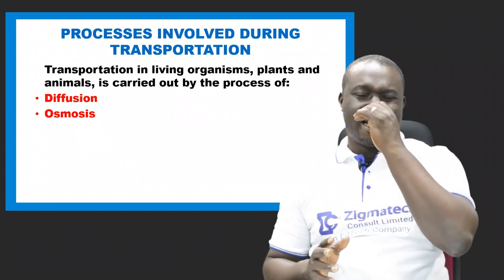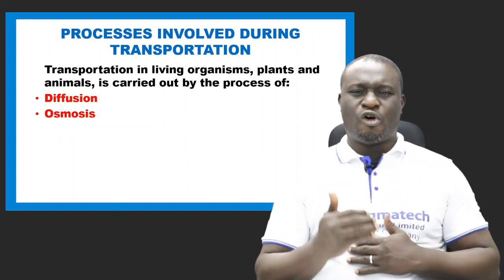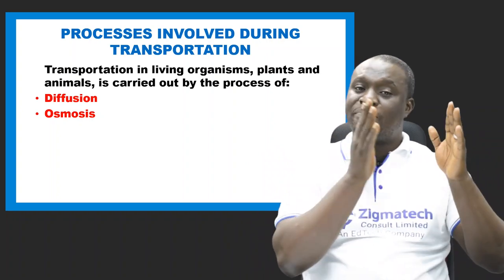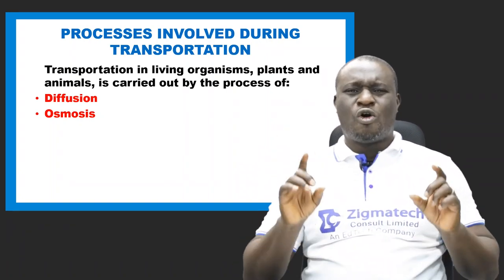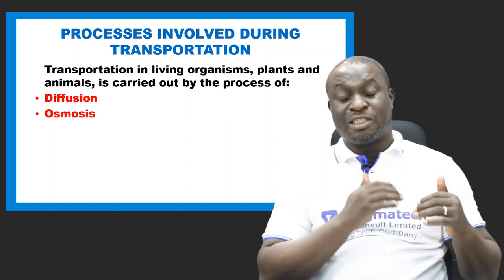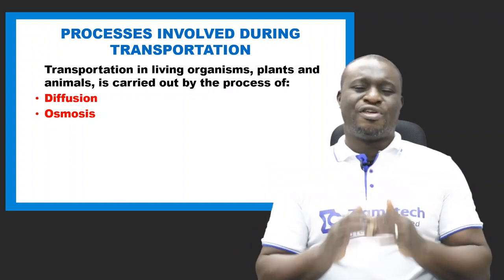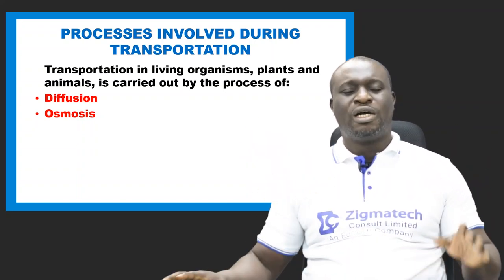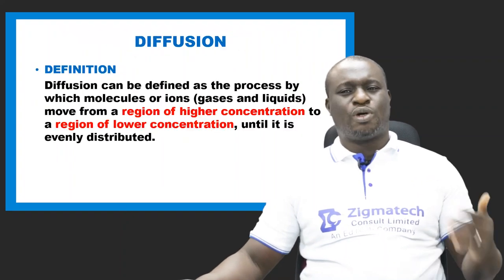The next thing to take note of is the processes involved during transportation. Transport system occurs both in plants and animals. There is always a common and significant process observed when transportation is carried out in both plants and animals. These two processes are referred to as diffusion and osmosis. Let's look at what diffusion and osmosis actually are.